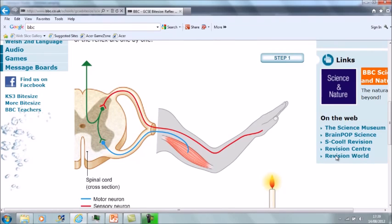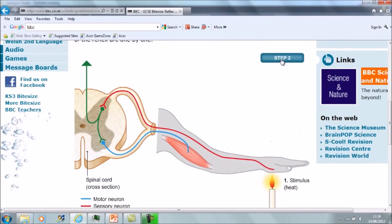So with the reflex arc, the first thing that happens is the hand comes into contact with something hot and in this case that's the candle. The stimulus which is the change in the environment, the heat in this case, is picked up by a receptor in the hand or a pain receptor in the hand and this can then send the impulse up the sensory neuron towards the central nervous system.